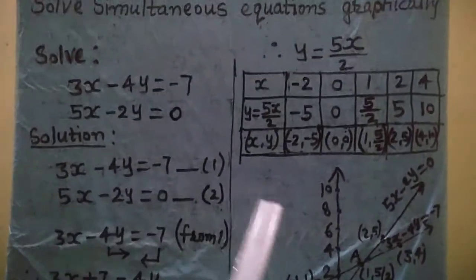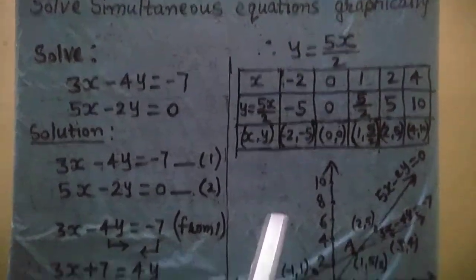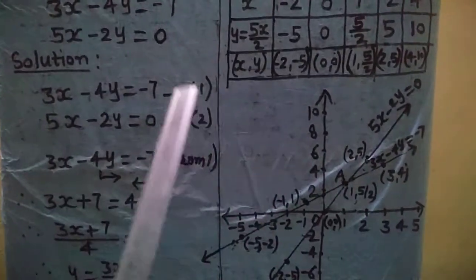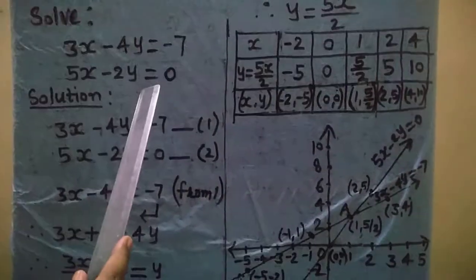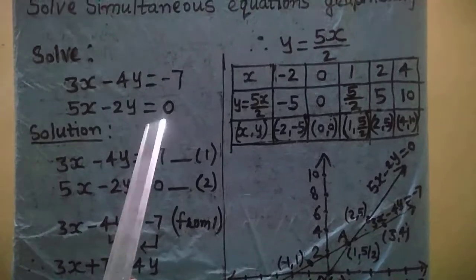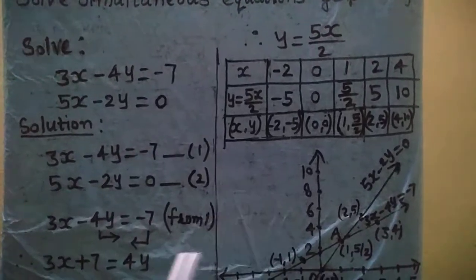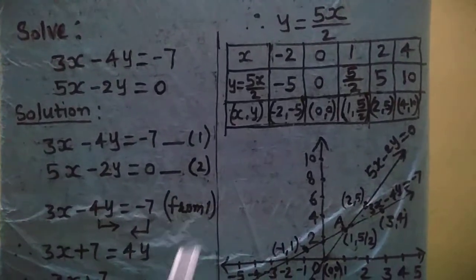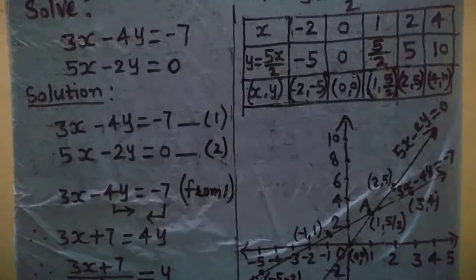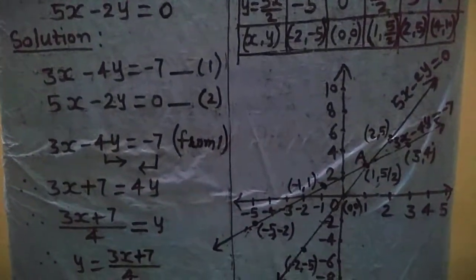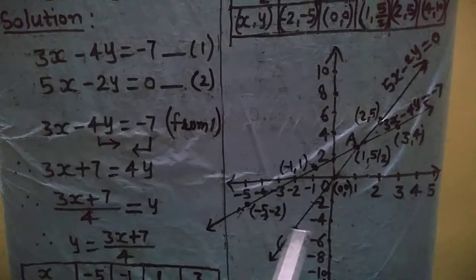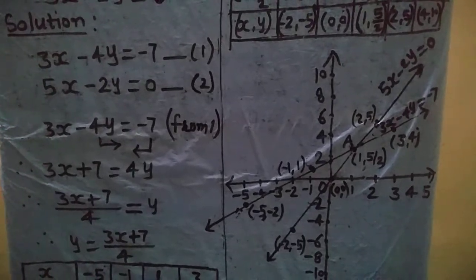So this is the graphical method. The important steps are: convert the given equation into the form of variable y, and then plot the graph using tables. Thank you.